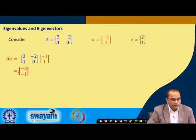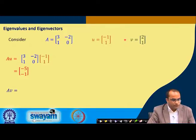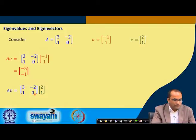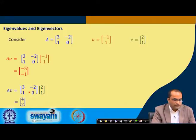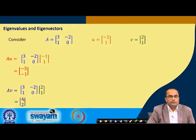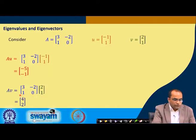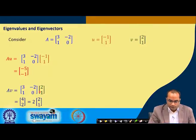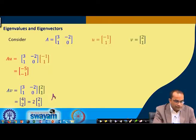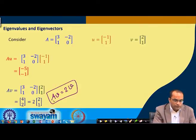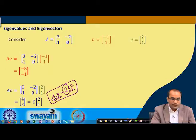We get the result [-5, -1]. But if we do this product with vector v, A times v gives [6 - 2, 4 + 0] = [4, 2]. What is interesting is that [4, 2] is nothing but 2 times the vector [2, 1], which is v. So A times v equals 2 times v — just one number has come in front of v.